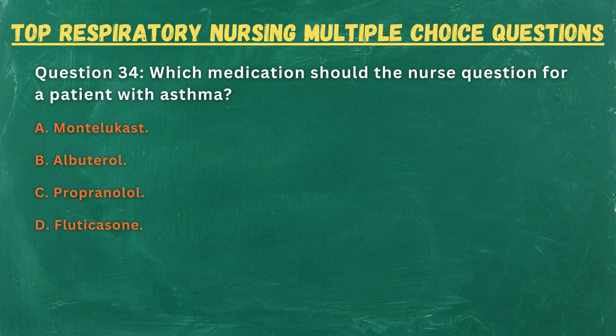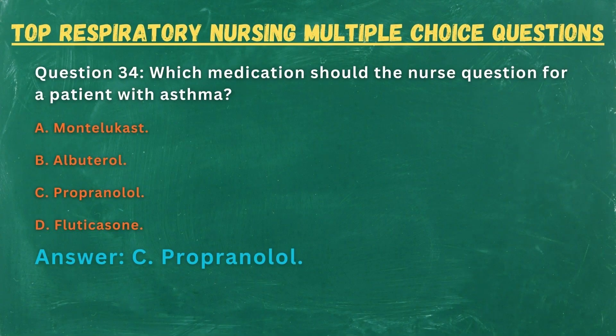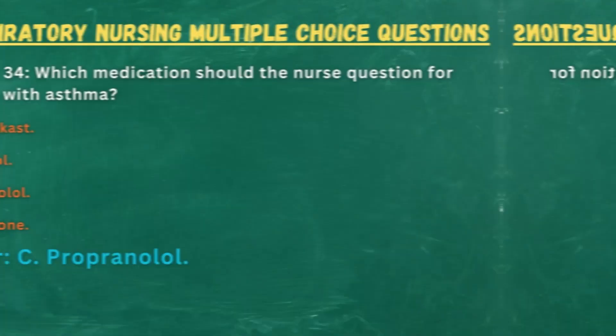Question 34. Which medication should the nurse question for a patient with asthma? A. Montelukast. B. Albuterol. C. Propranolol. D. Fluticasone. Answer: C. Propranolol.